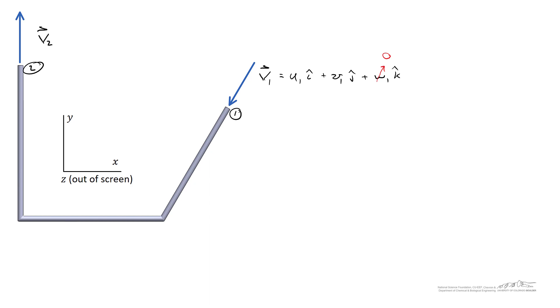We can do something similar for v2. The first question is: what are the signs of these velocity components u1, v1, u2, and v2?